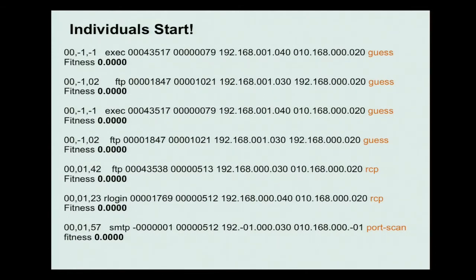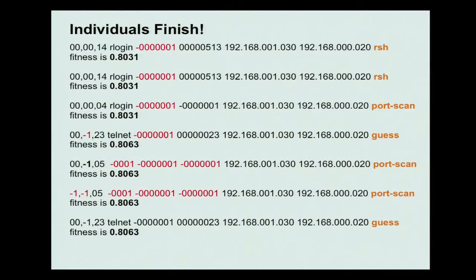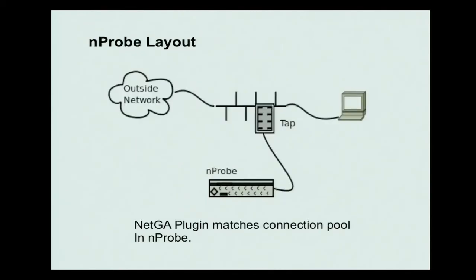To summarize, these are the random individuals that were generated from the start. You can see there's a fitness function that identifies how well it identifies the rules in the attacks. Then what happens is the finished set, these are the rules here. You can see the first two cover the RSH rule, and one would be a perfect score. That means that the rule only identified attacks and didn't accidentally match non-attacks based upon the audit data.